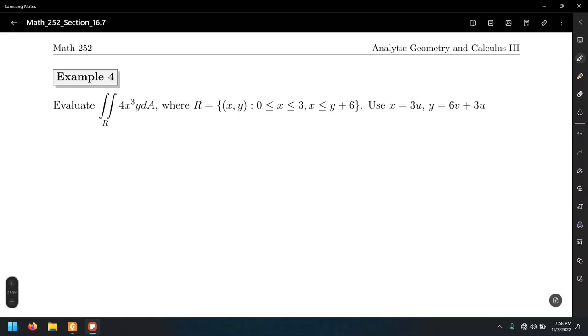This should say Y varying between X and X plus 6. That's a little typo here. The X coordinate varies between 0 and 3, that's fine.